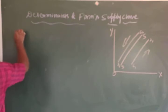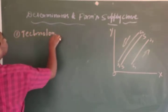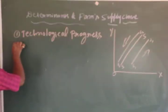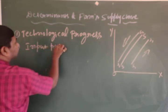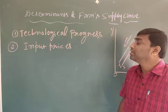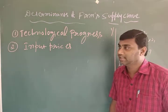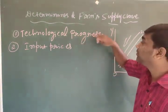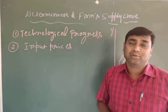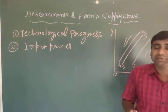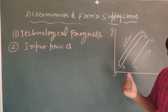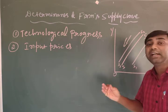The first determinant is technological progress and the second is input prices. Because of these determinants, the supply curve will shift rightward or leftward. When the supply curve shifts rightward, the quantity of supply will be increased. When the supply curve shifts leftward, the quantity of supply will be decreased.